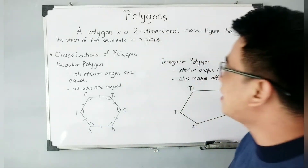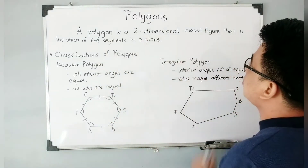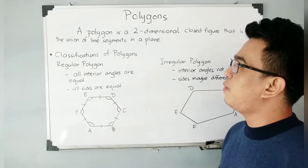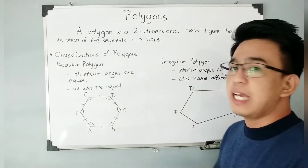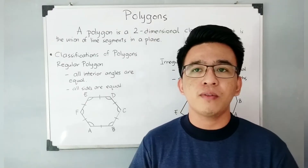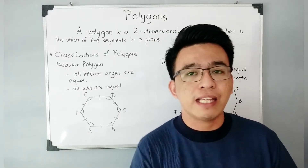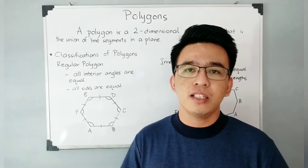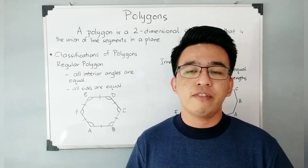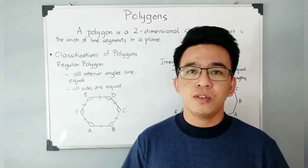So let's define first what is a polygon. A polygon is a two-dimensional closed figure that is the union of line segments in a plane. You're familiar with those shapes because you'll really encounter them during your elementary days, even in grade 4, grade 5, grade 6, and grade 7 mathematics.